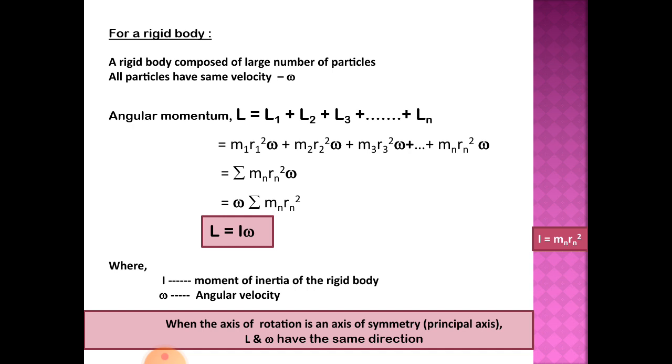And omega is the angular velocity of this rotating rigid body. Then when the axis of rotation is an axis of symmetry, the vectors L and omega will have the same direction. Thank you.